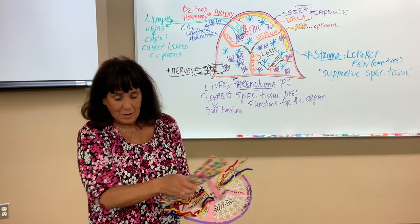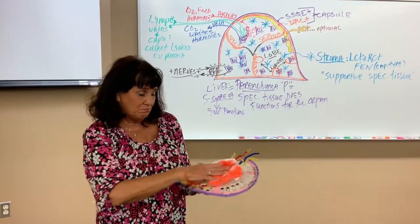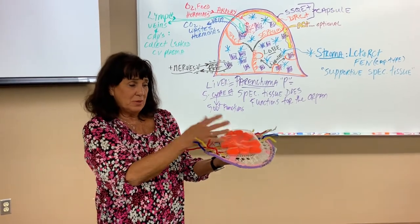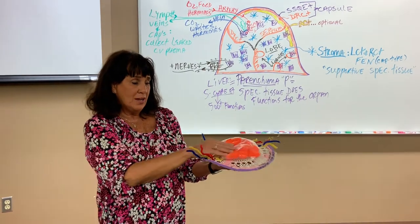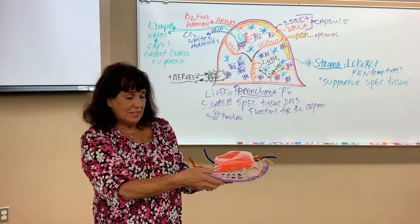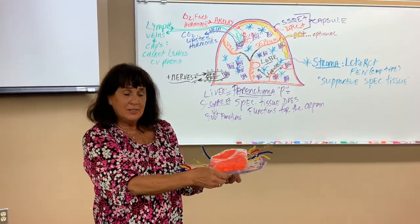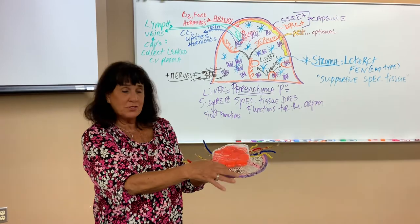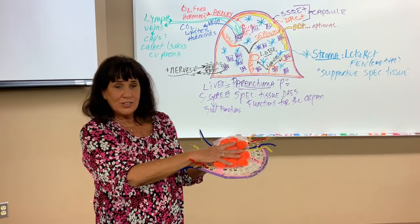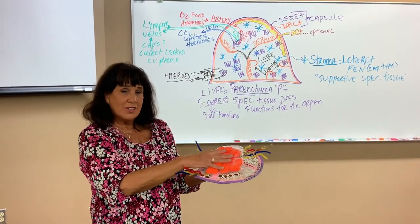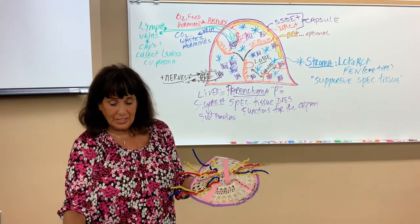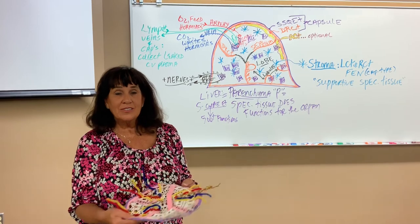If this is neurons — nerve tissue — then these would be the parenchyma: the neurons of the brain or spinal cord. The loose CT would be non-fenestrated because it doesn't like neurons to be leaked on with all the oxygen, food, hormones, etc. The parenchyma changes depending upon what solid organ we're talking about. That's the summary of how we build solid organs.